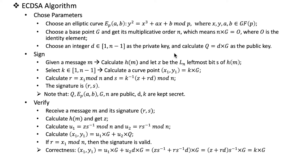Now we can use these keys to sign a message. Given a message M, we calculate its hash value — here we usually use the SHA-2 hash function, for example SHA-256, which we talked about in a previous video. We get the hash value of the message and use Z, which is the leftmost Ln bits of the hash value. Then we select a random integer K, also in the range between 1 and n minus 1, and calculate an elliptic curve point (x1, y1) as K times G, and then calculate R as x1 modulo n.